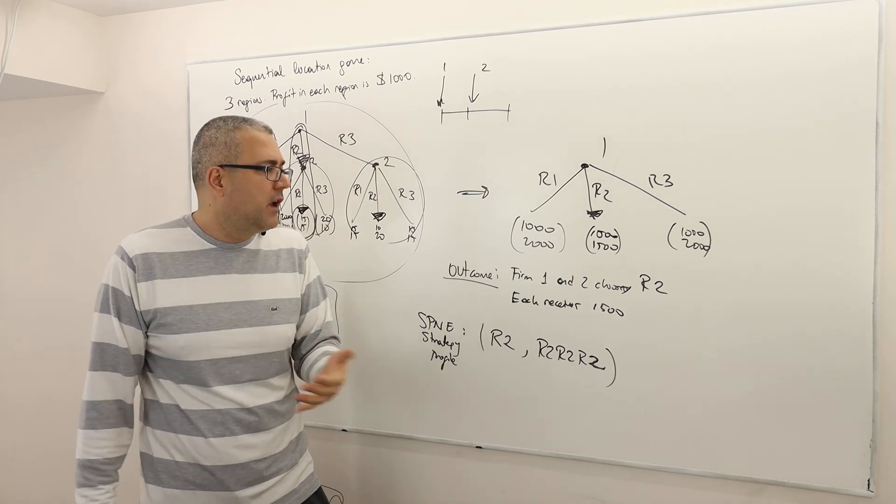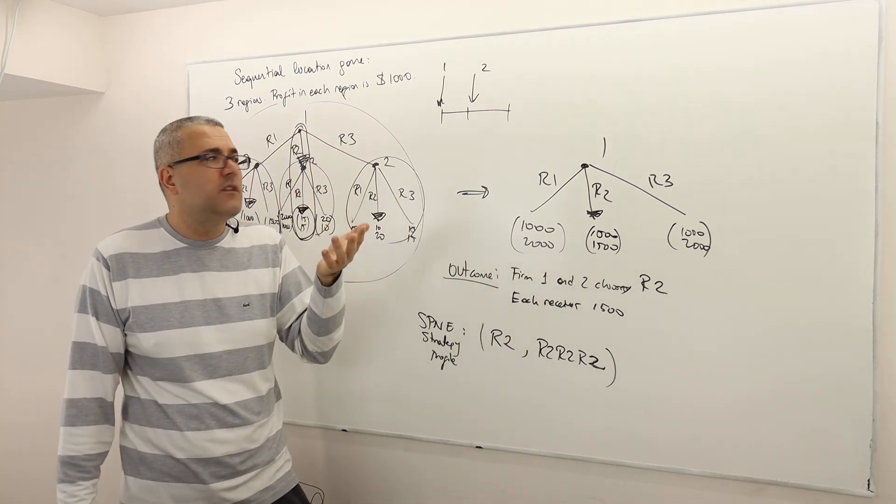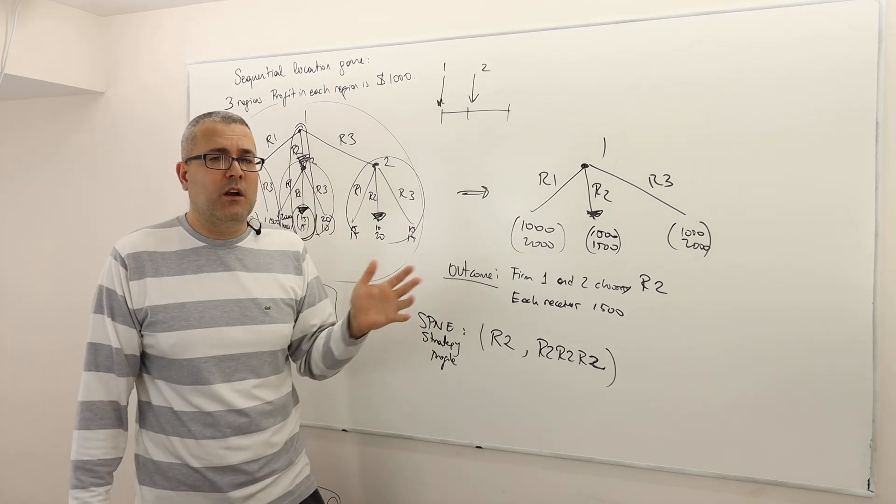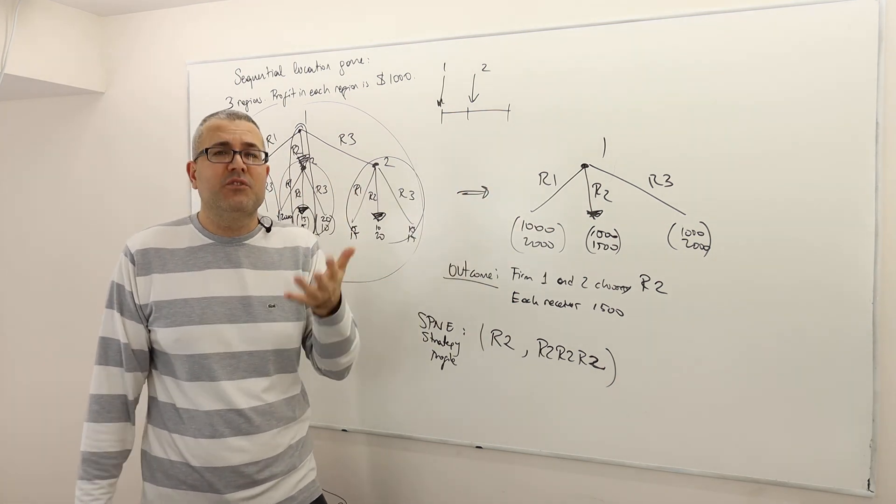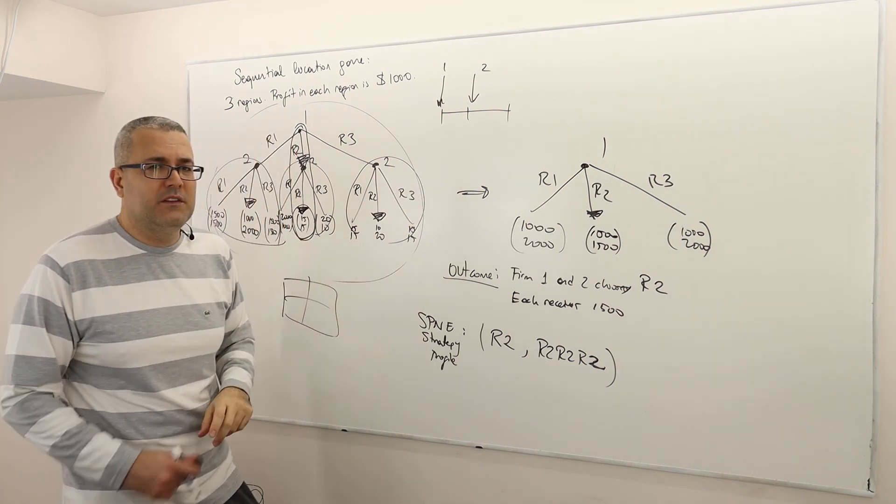So it's basically describing the strategy profiles in words. So that would be fine. But if you do not tell me what player two is going to do once player one does something different than R2, well, that is not strategy. So that's just the equilibrium path. So be careful about the distinction.